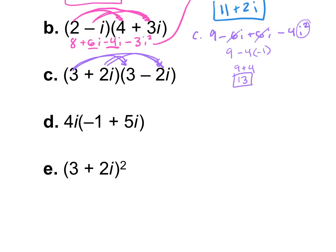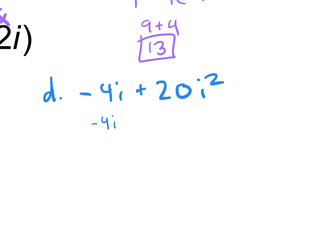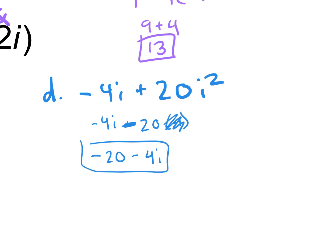For example D, distribute: 4i times negative 1 is negative 4i, and 4i times 5i is plus 20i squared. Since i squared turns into negative 1, this becomes negative 4i plus 20 times negative 1, which is negative 20. Written in standard form: negative 20 minus 4i.